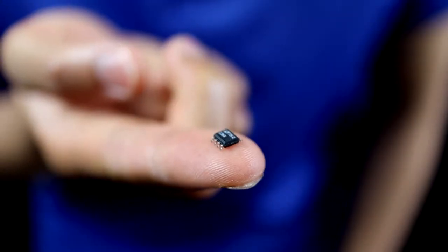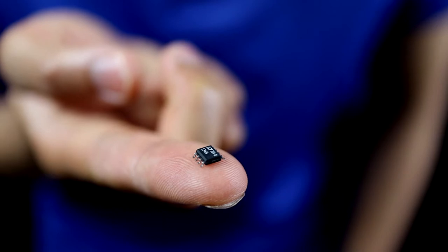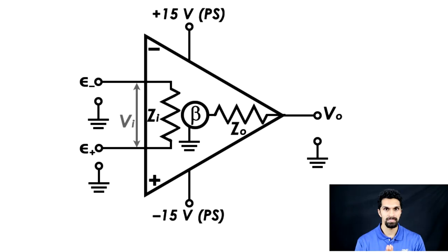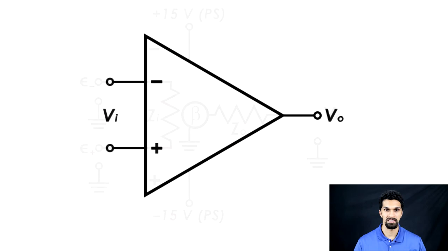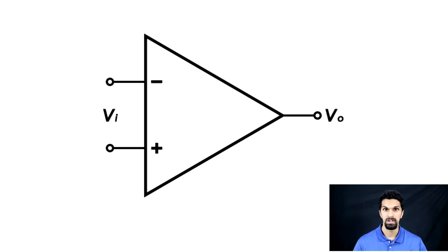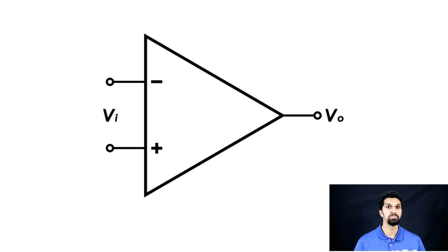Operational amplifiers are also very small — less than one square centimeter. Schematically, an op amp looks more simplified: things like beta, input resistance, output resistance, and power supplies are all assumed. However, an op amp by itself can amplify even a small voltage to possibly unusable or even dangerous levels — one millivolt could become a thousand volts.